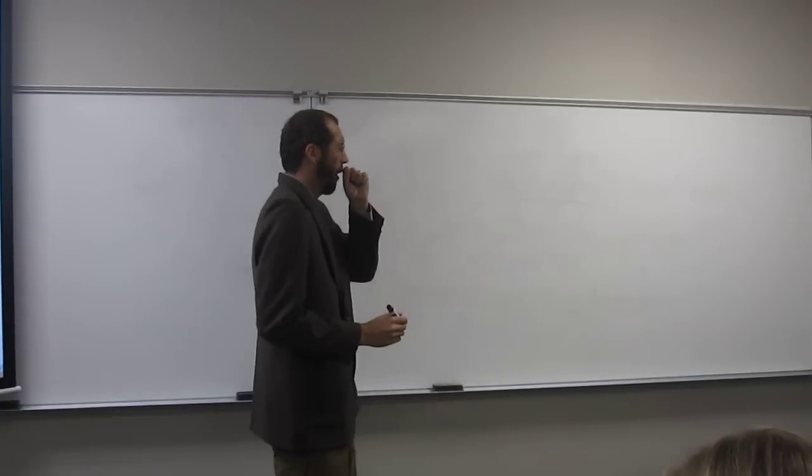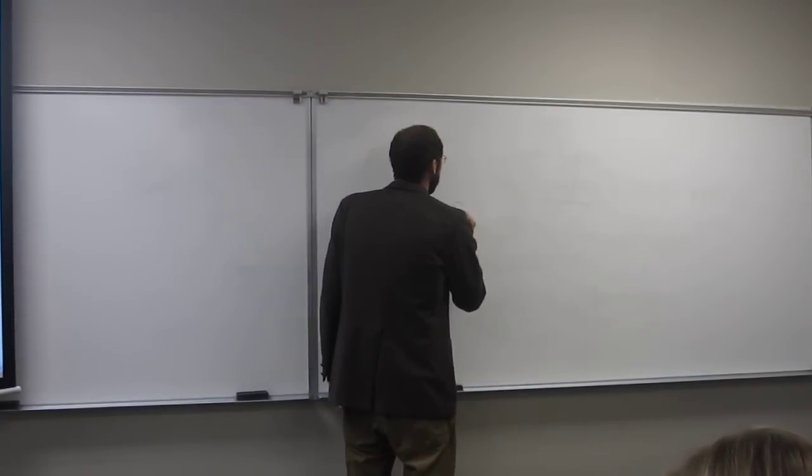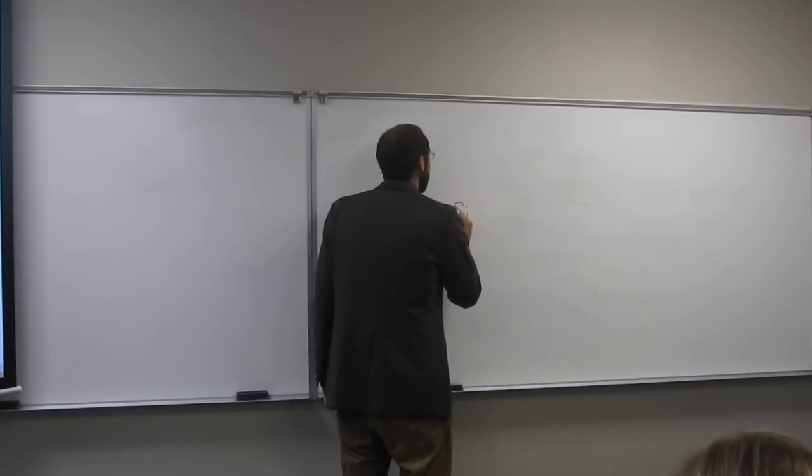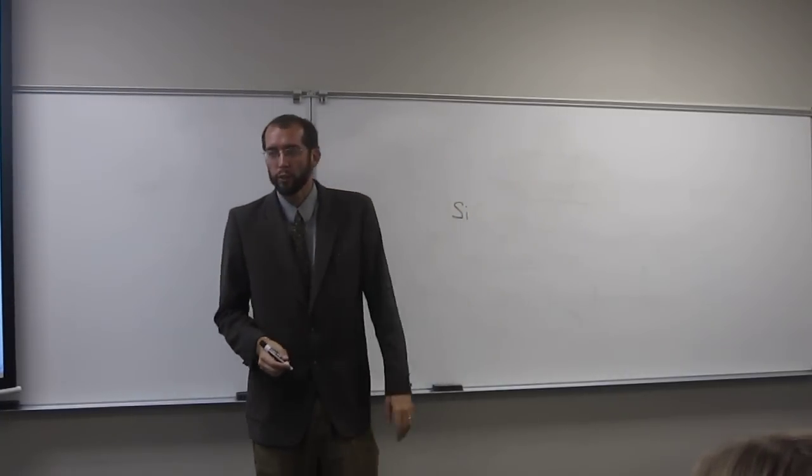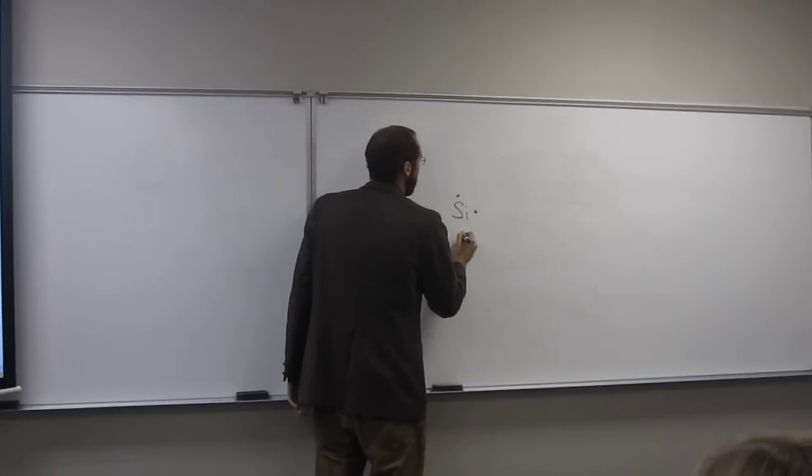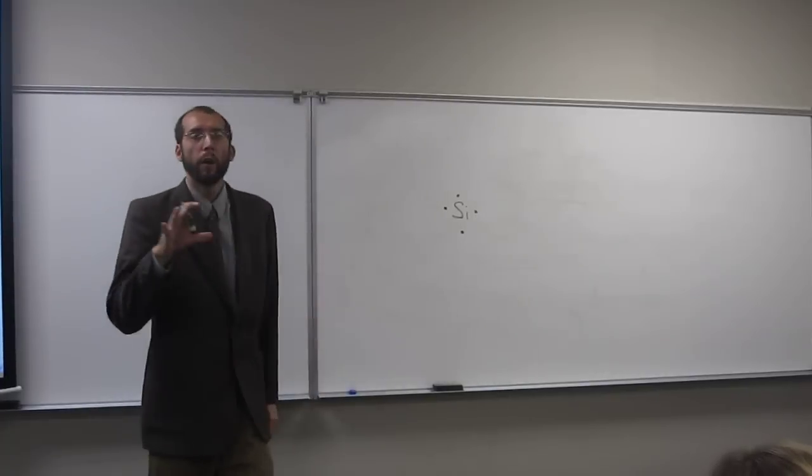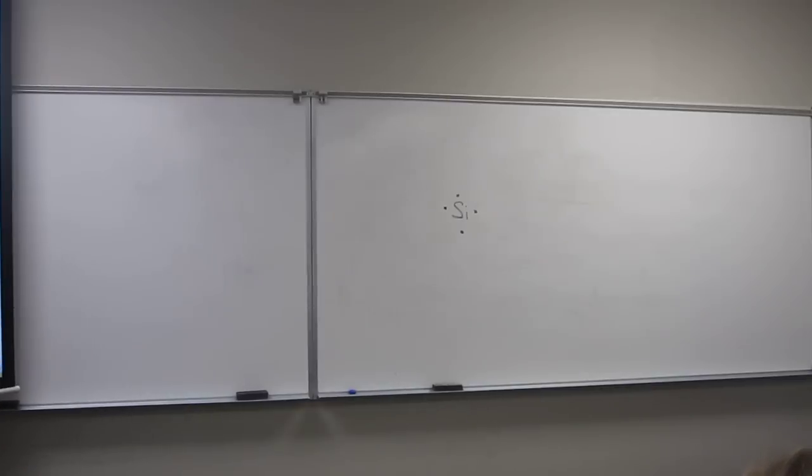So the first thing I would want to do is write out the two atoms. So silicon is Si, and then write out its Lewis structure. So, one, two, three, four. So, from what we said, how many bonds do you think silicon is going to be making?